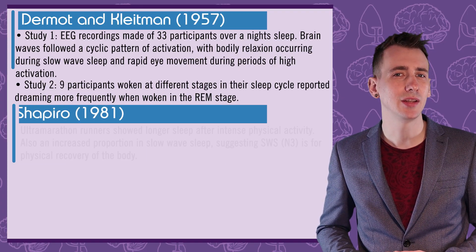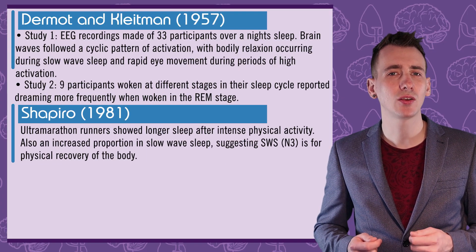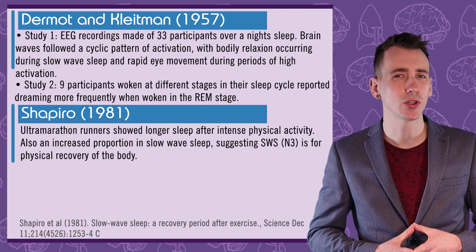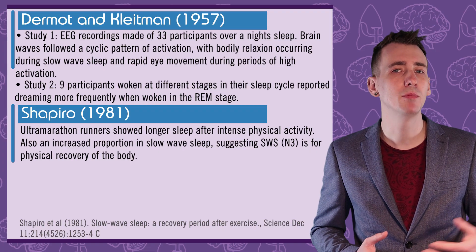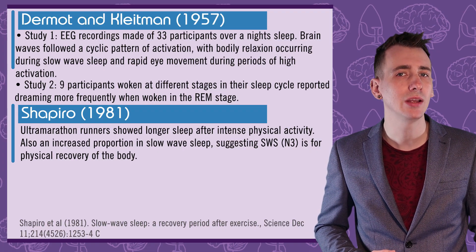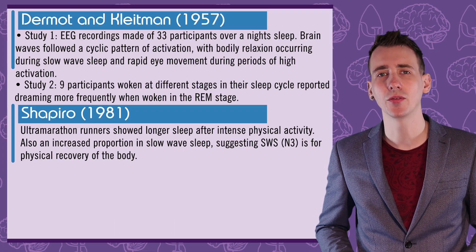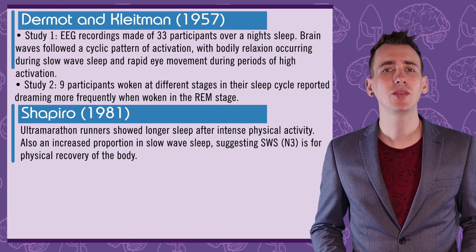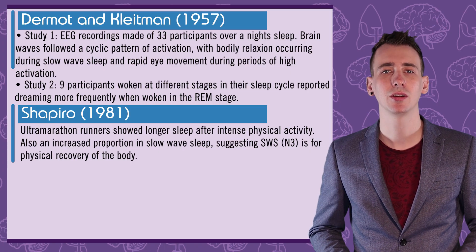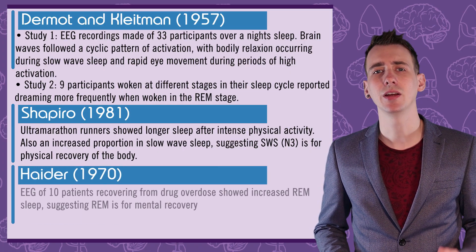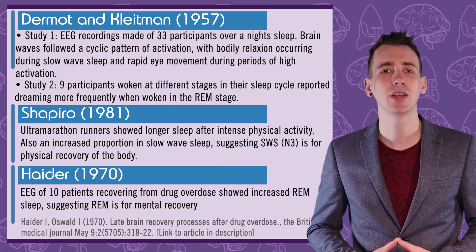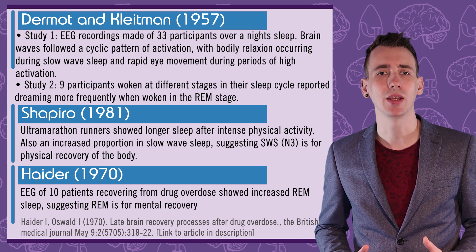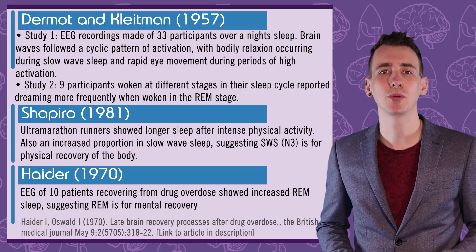Research by Shapiro in 1981 showed that intense physical activity by ultramarathon runners resulted in longer sleep and an increased proportion of slow-wave sleep, indicating that sleep — and in particular slow-wave sleep — is for physical recovery of the body. The function of REM is debated by psychologists, with many suggesting REM has a role in memory consolidation. However, research by Haider in 1970 suggests REM sleep is for brain recovery, as this research showed an extended period of REM sleep for 10 patients whose brains were recovering from overdose.